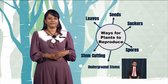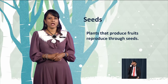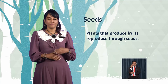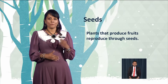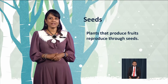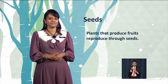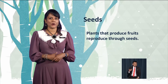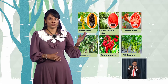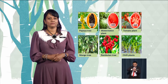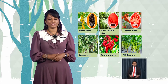Most plants reproduce through seeds. Can you name some plants that reproduce through seeds? Good job — papaya, watermelon, tomato, mango, rambutan, and chili plants reproduce through seeds.